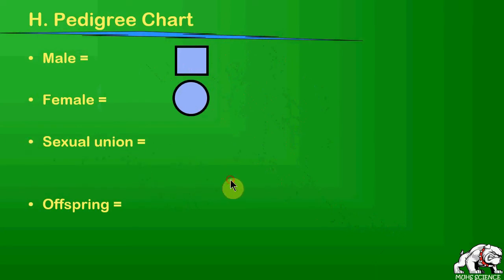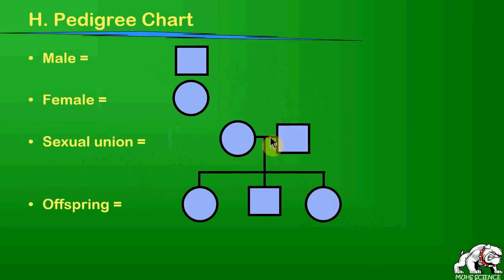A sexual union. So if we have offspring, sexual unions are shown by a connecting bar between the male and female, and then the offspring are shown as a bar that drops down. The first child is usually over here on the left, the second child is next, and it goes from left to right in terms of order of children.